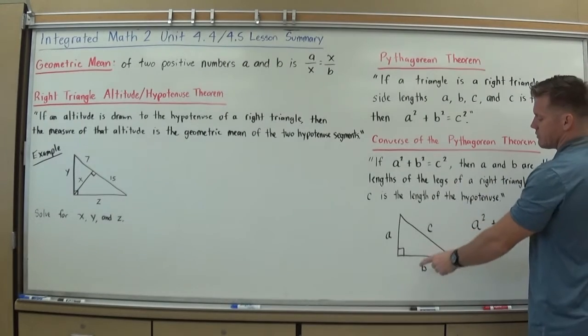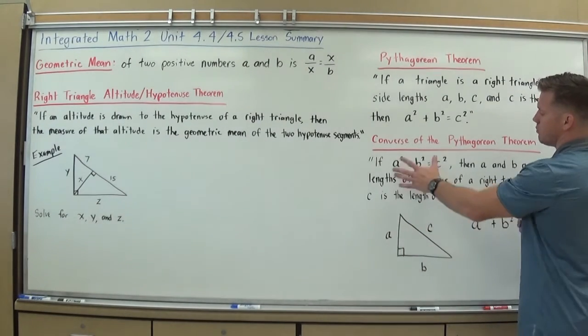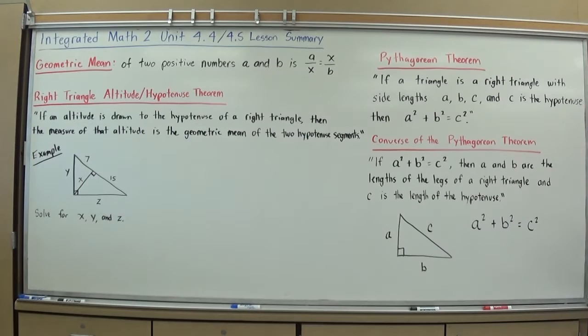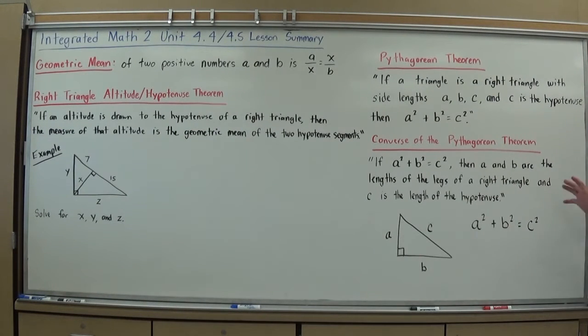You can use this if you don't know if something is a right triangle, but they give you some side lengths. You can actually plug it into the Pythagorean Theorem, and if it does work perfectly, then you now know you are dealing with a right triangle, which is nice.